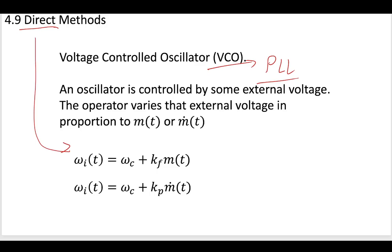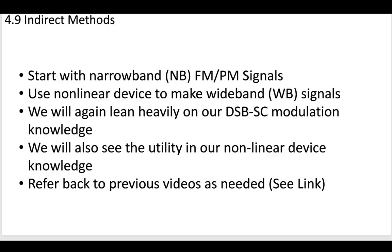However, most of the rest of this video will discuss some historical methods for generating FM signals, mainly indirect methods. You would start with a narrowband or approximation of your angle modulated signal. You'd use a nonlinear device to make the wideband signal. We'll see how this works in later videos and lean heavily on our knowledge of how DSB-SC modulation works.